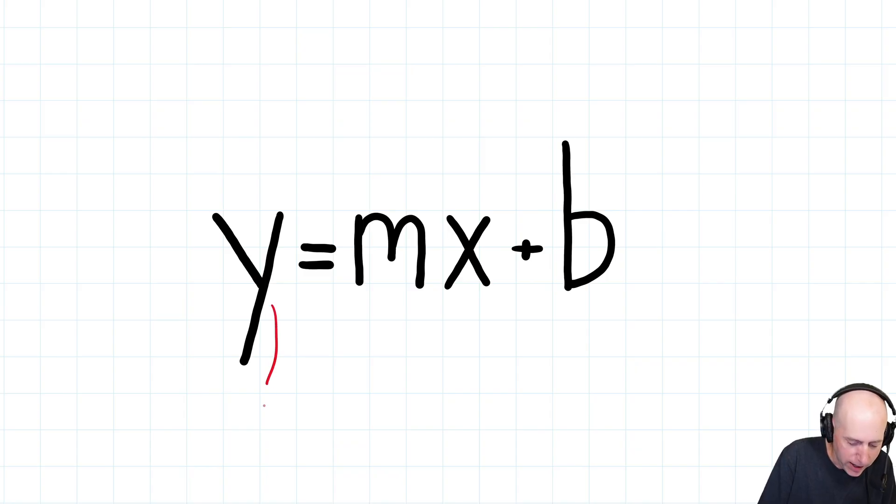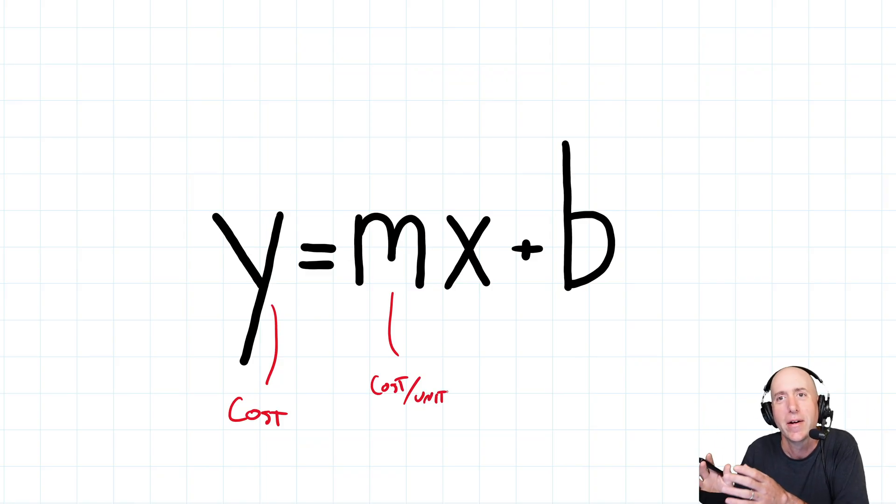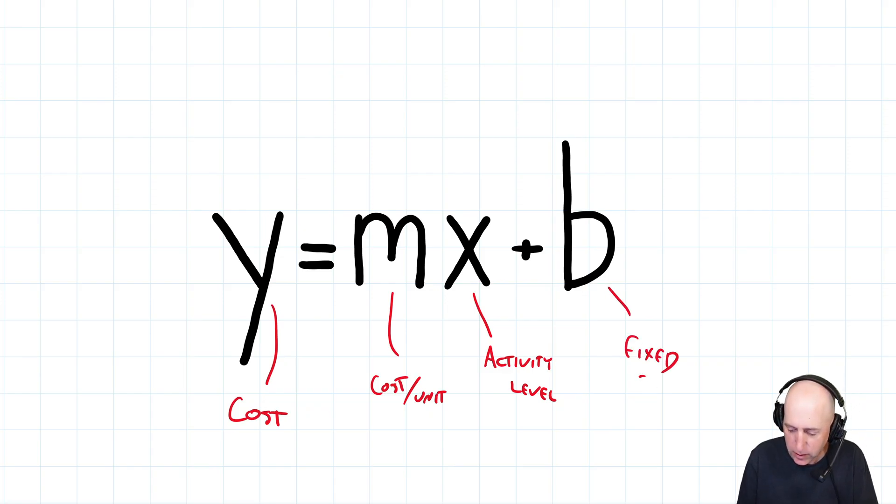If you've taken a math class before, you've seen this formula before. This formula is a cornerstone of our class. In accounting, Y is our total cost. M is our cost per unit of activity. For Pepsi, it's the cost per can produced if we're thinking about the canned Pepsi. X is the activity level - that's how many cans am I making. And B is the fixed cost. If you've taken a math class, you'll know Y is called the dependent variable, M is the slope of the line, X is the independent variable, and B is the intercept. It's all the same sort of math that's going on - it's linear math.